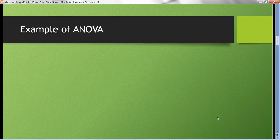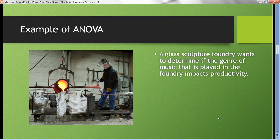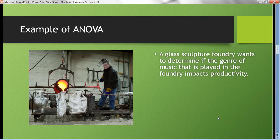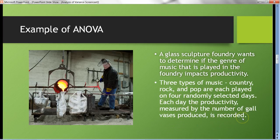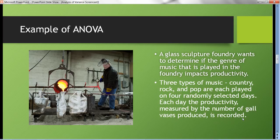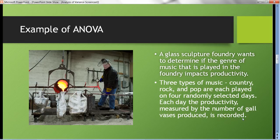Let's do this by example. A glass sculpture foundry wants to determine if the genre of music that's played in the foundry impacts productivity. They have background music playing. Three types of music—country, rock, and pop—are each played on four randomly selected days. Each day, productivity measured by the number of glass vases produced is recorded.